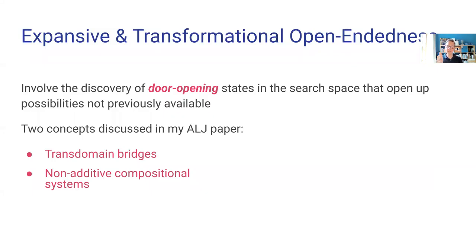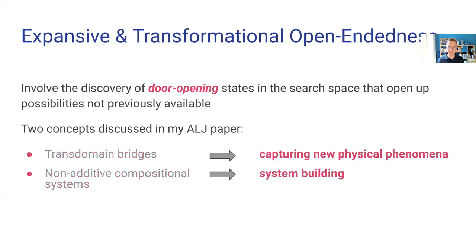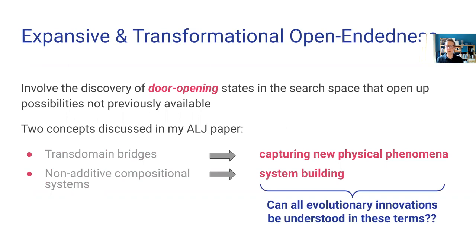The question is: what about the other kinds? These other, more interesting kinds of open-endedness involve a door-opening state in the search space that opens up possibilities not previously available. In my previous paper I discussed ways in which this could happen in terms of trans-domain bridges and non-additive compositional systems. In the current paper I want to generalize those two topics, talking in terms of capturing new physical phenomena and system building, and asking whether all evolutionary innovations can be understood in these terms.